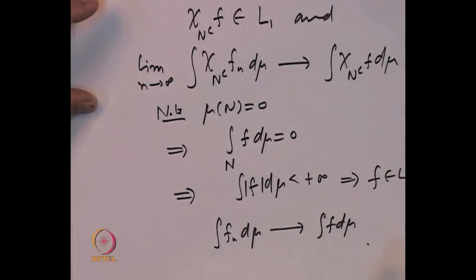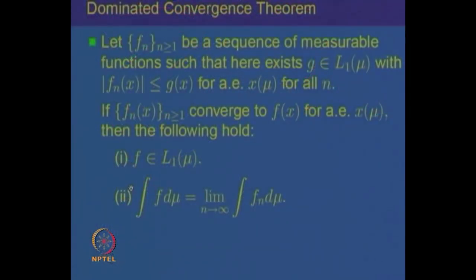This gives us the required result: from almost everywhere conditions we deduce the result from the fact that something holds everywhere. So the dominated convergence theorem holds whenever the sequence F_n is dominated by g and F_n converges to F almost everywhere. Then the limit function F is integrable and the integral of F_n converges to the integral of F. This is one of the important theorems which helps us interchange the limit and the integral sign.